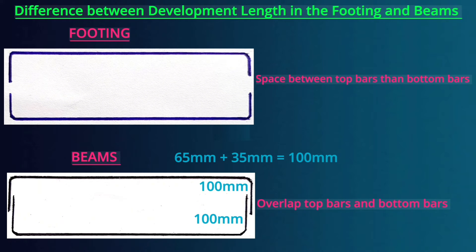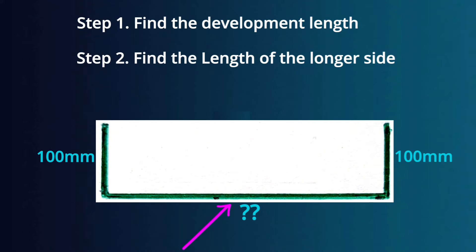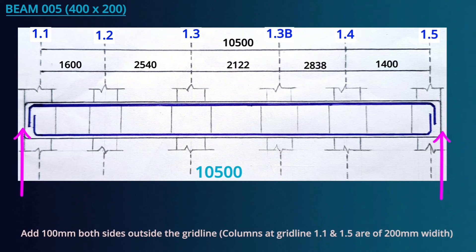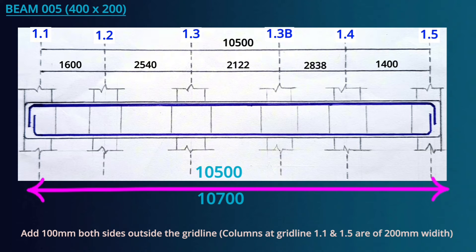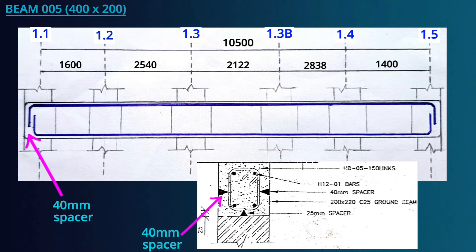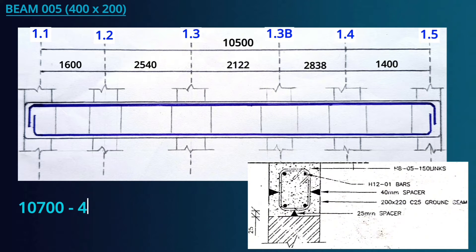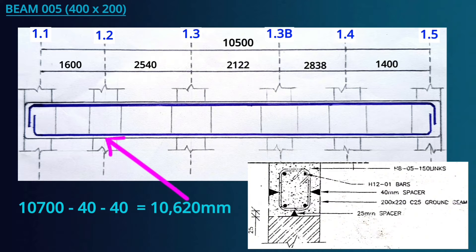Since we have both development lengths, step two is to find out the length of the longer side — be sure to understand this properly as this is where many people make mistakes. From gridline 1.1 to gridline 1.5, the total length is 10 meters 500 millimeters. Adding 100 millimeters on both sides gives an external distance of 10 meters 700 millimeters. We then deduct a 40mm spacer block on each side, leaving us with 10 meters 620 millimeters. This is the length of the steel bar along the longer side of the beam.